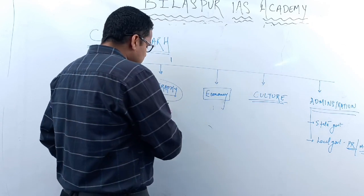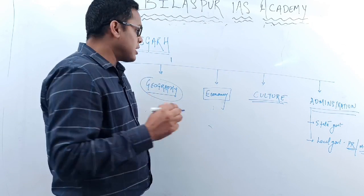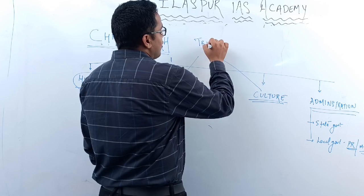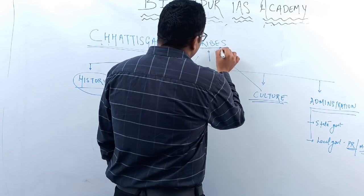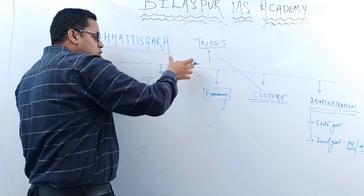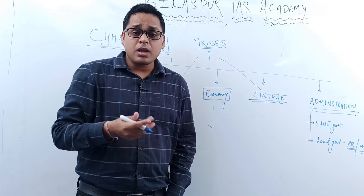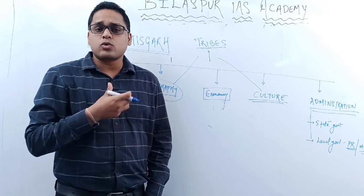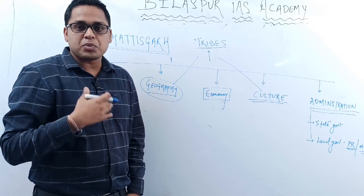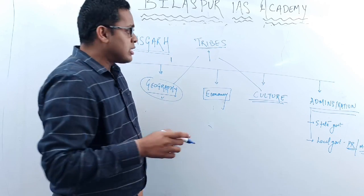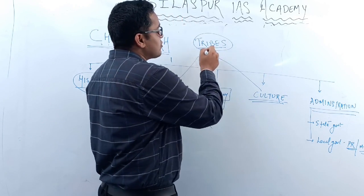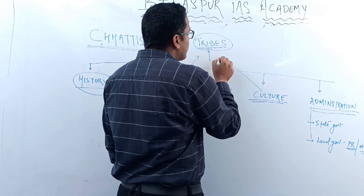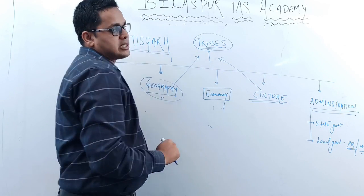Under the culture section and the geography section, both link into a common topic — tribes. You have to study the geography of these particular tribes with respect to their locality. We will understand what conditions these tribes are living in, their livelihood options in terms of geography. We will also see the cultural heritage of Chhattisgarh, which is mostly signified by its tribes. So the culture section includes tribes, and tribes appear in both geography and culture.